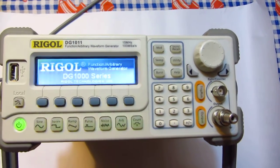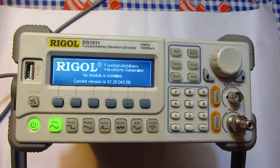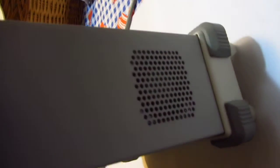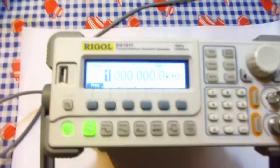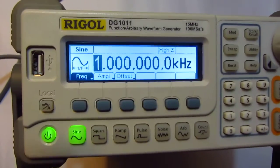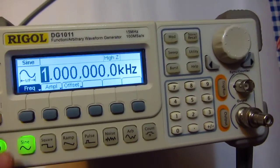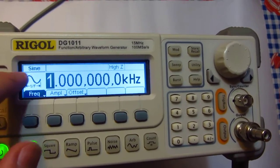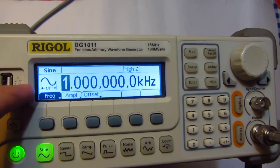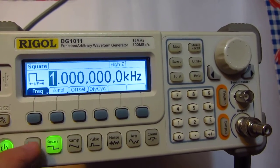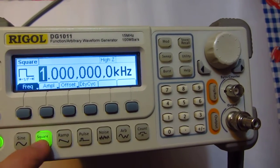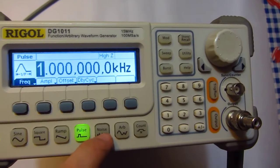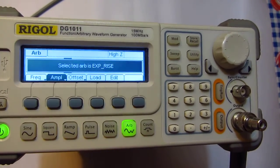Beep. Okay, there's the fan. Let's see, so it's automatically selected the sine wave. Here's the sine itself and we can choose another wave: square wave, ramp, pulse, noise, arbitrary signal, and a counter thing.